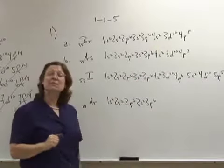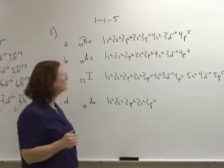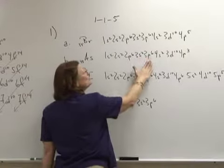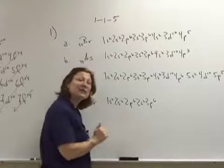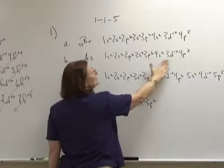Arsenic is atomic number 33. It has 33 protons as well as 33 electrons in the neutral atom. 1s2, 2s2, 2p6, 3s2, 3p6, 4s2, 3d10 and 4p3. And I add these numbers up. 2, 4, 10, 12, 18, 20, 33.